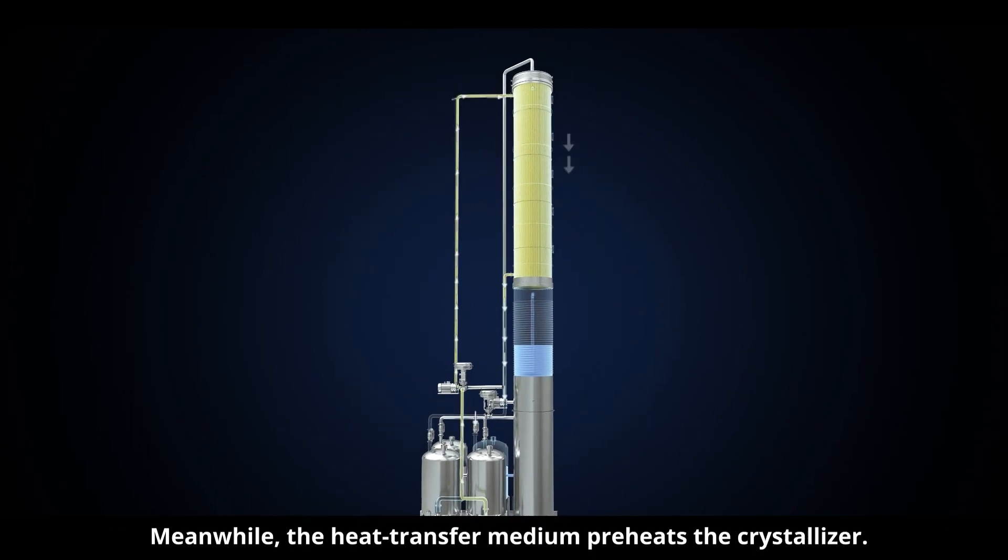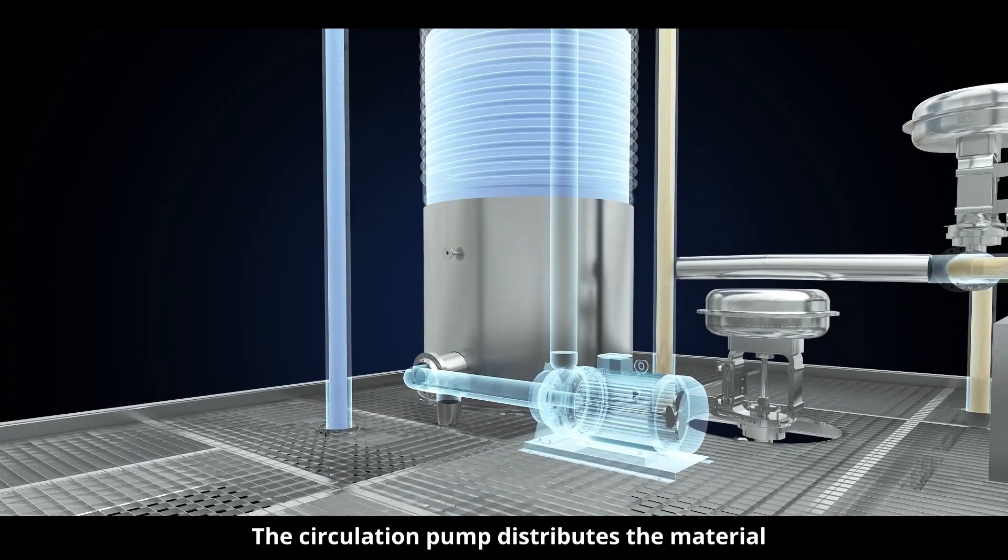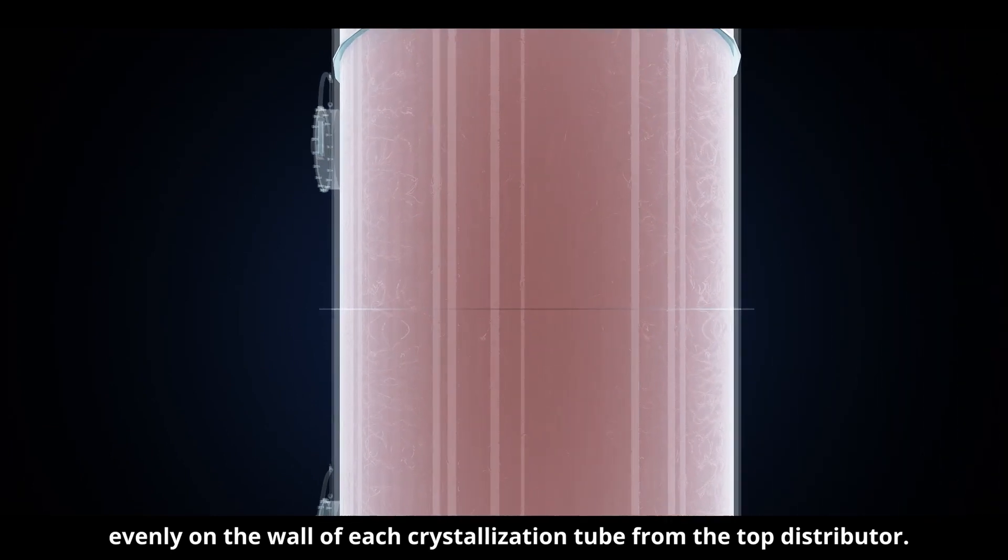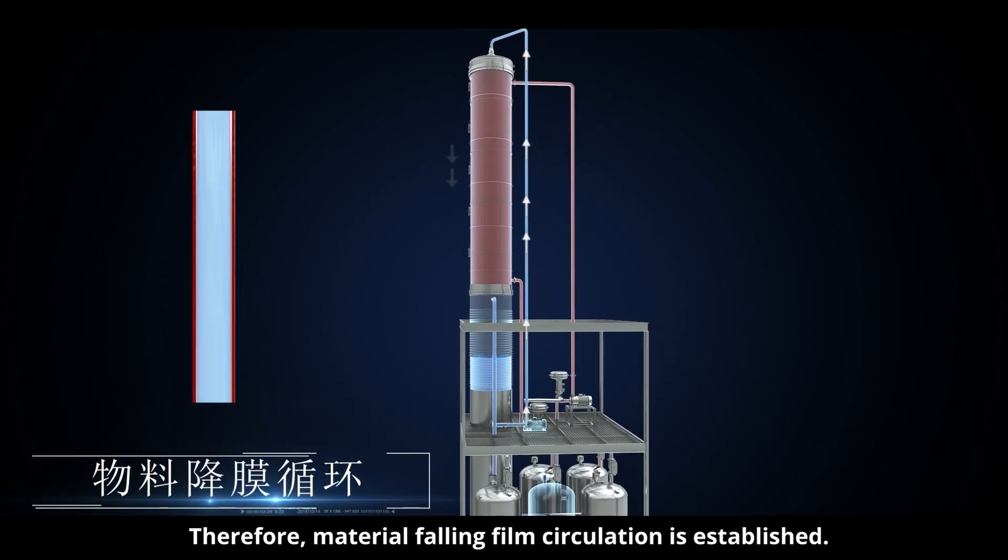Meanwhile, the heat transfer medium preheats the crystallizer. The circulation pump distributes the material evenly on the wall of each crystallization tube from the top distributor. Therefore, material falling film circulation is established.